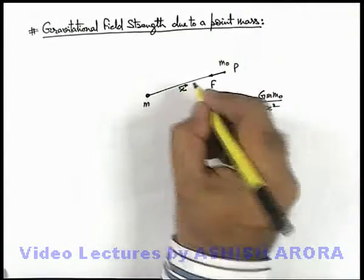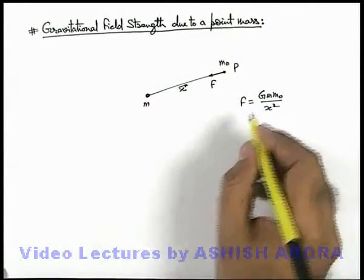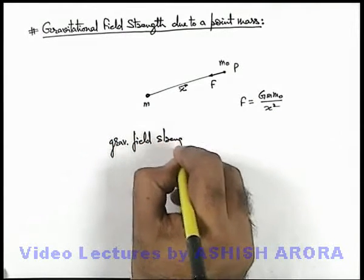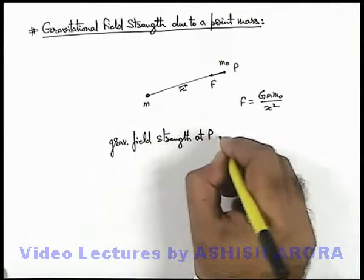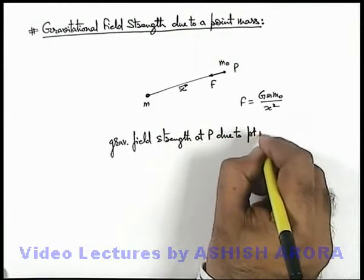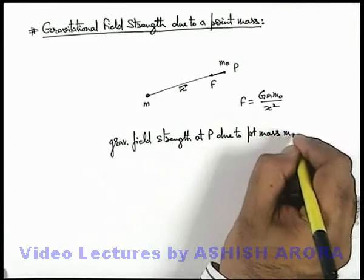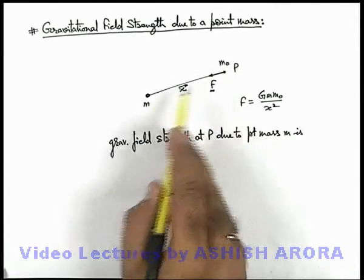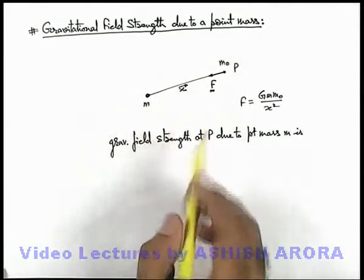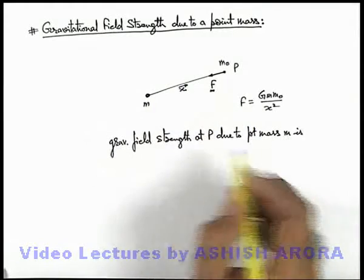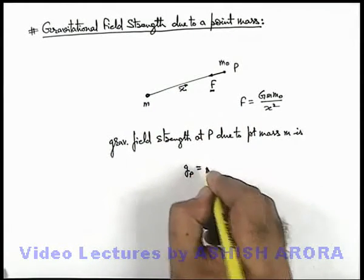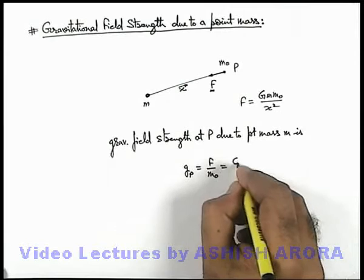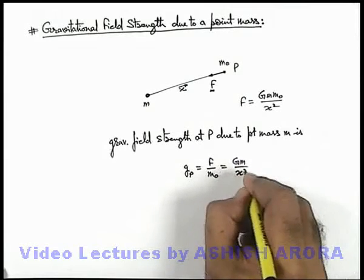This x can also be written as a position vector of point P. So in this situation we can write gravitational field strength at P due to point mass m. This force is acting on m₀ because m₀ is placed in the gravitational field of this point mass m. So gravitational field at point P due to the point mass m can be written as G_P, and this G_P we can write as F divided by m₀. Its magnitude will be G·m divided by x squared, as m₀ gets cancelled out.